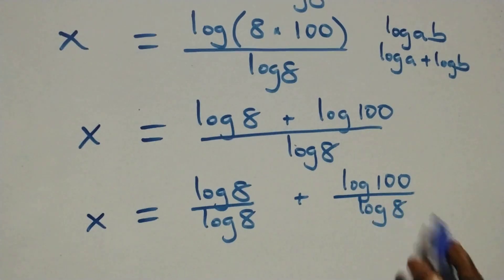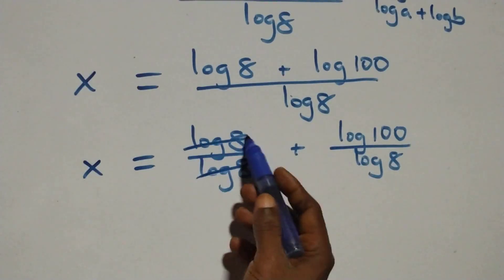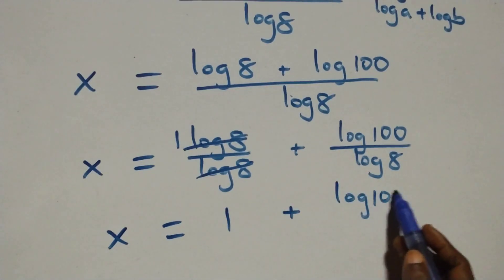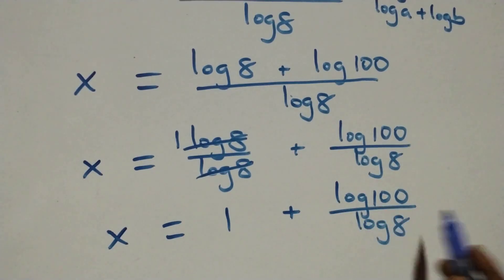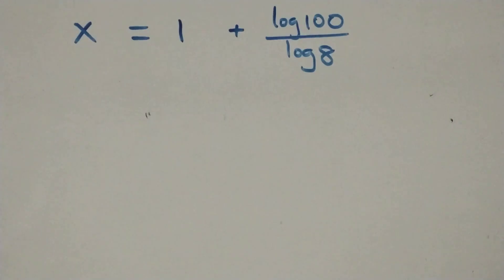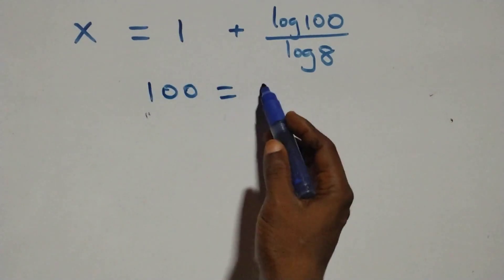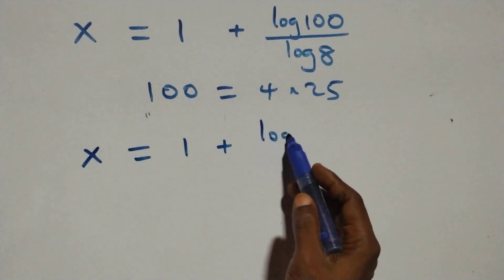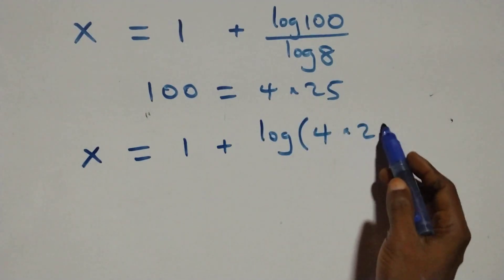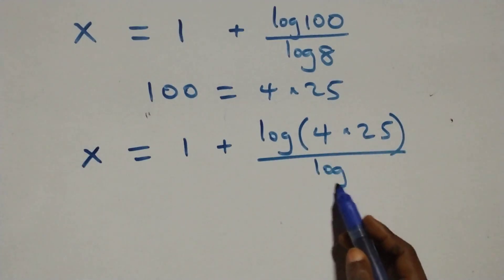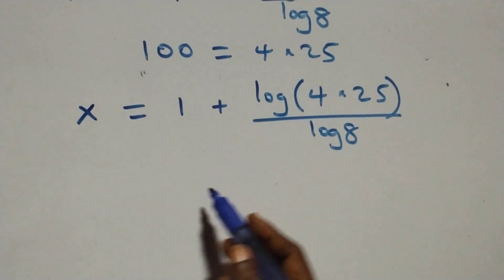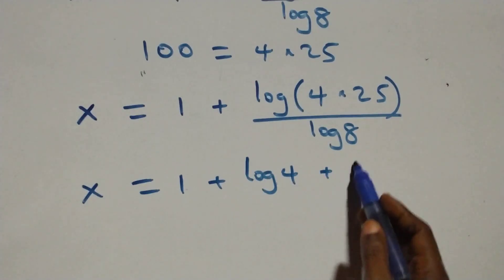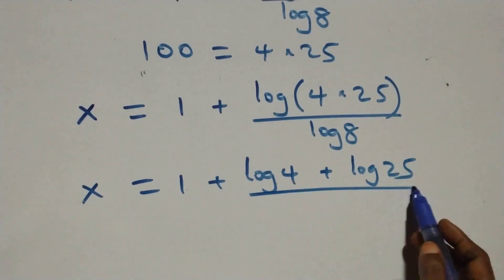Log 8 over log 8 cancels to give 1, so we have x equals 1 plus log 100 over log 8. Now 100 can be expressed as 4 times 25, which implies x equals 1 plus log(4 × 25) over log 8. This again follows the product rule of logarithms, giving x equals 1 plus (log 4 + log 25) over log 8.